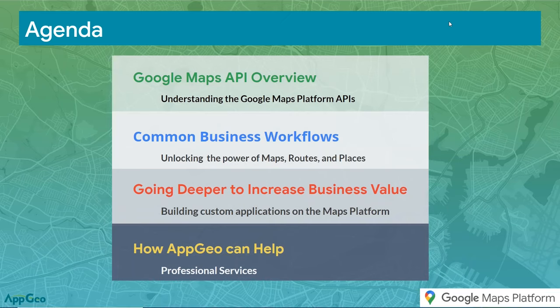Today's agenda: we are Applied Geographics, or AppGeo, one of Google Maps' top Premier Partners. We also have a location-based services badge, so we not only sell Google Maps products and APIs, we also build apps. We'll start with an overview of the APIs and the Maps Platform, then go into common business workflows — unlocking the power of Maps, Routes, and Places — and then deeper into increasing business value and how AppGeo can help.